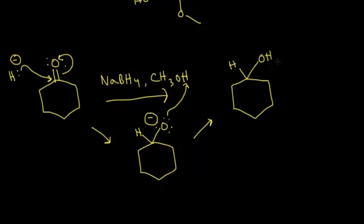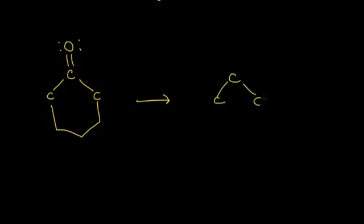This is a reduction reaction — we are reducing the molecule to form our alcohol. Let's take the reactant and the product and assign some oxidation states to see how this is an example of a reduction. I'm going to redraw the starting ketone and the product, putting in the relevant atoms so we can think about oxidation states. We need to draw in the electrons on these bonds.